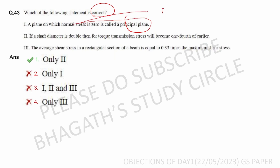On a principal plane, shear stress is zero — only normal stress acts. So the statement that shear stress exists on a principal plane is wrong.